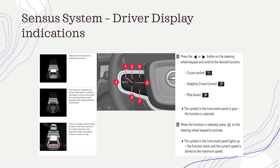The Sensus system displays very similar information and usage is also similar to the Google system — there is not much difference in the indications. The main difference is that you use buttons four and five, the arrow buttons, to select between Cruise Control, Adaptive Cruise Control, and Pilot Assist, followed by pressing button number one to initiate. On the right-hand side of the slide, there are three different indications shown while selecting between the three modes.